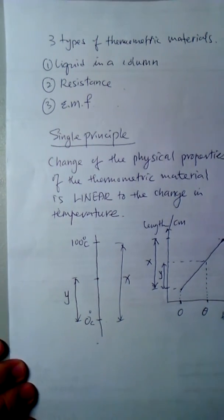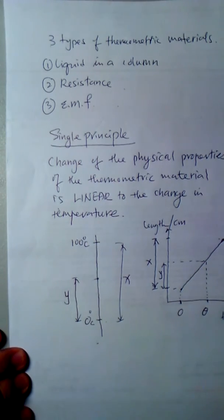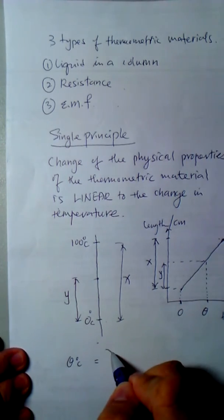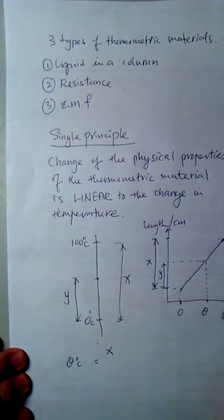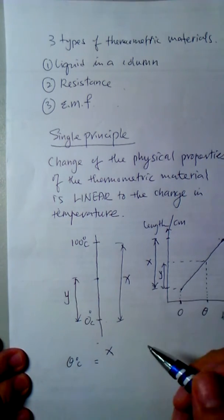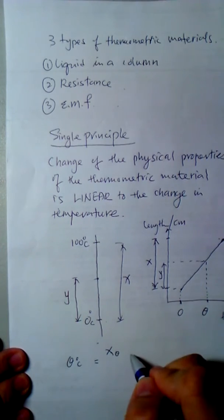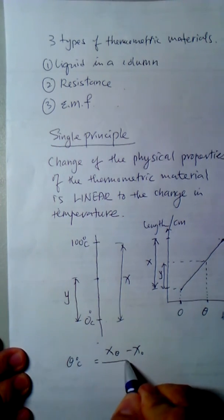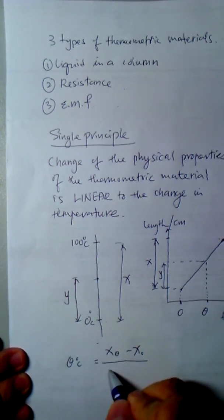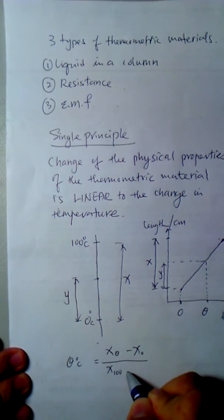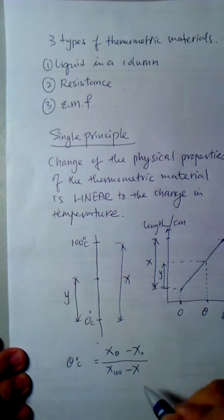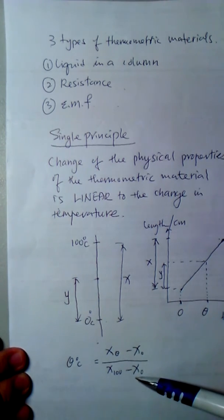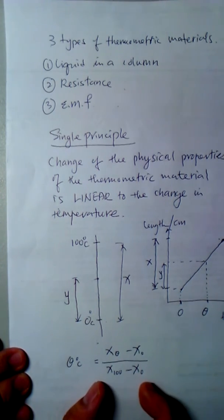We will use a simple fact that if I want to find theta, then theta in degree Celsius will be equal to the physical property of the substance, the liquid in a column at theta minus the freezing point, which is 0 degree Celsius, divided by the property of the material at 100 degree Celsius minus the property of the material at 0 degree Celsius.